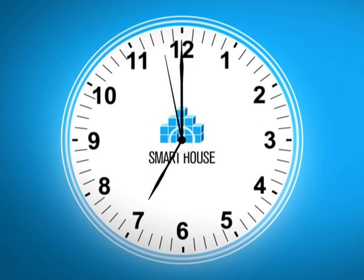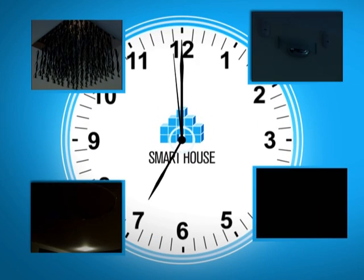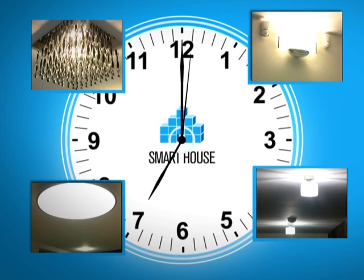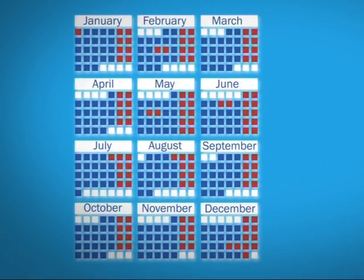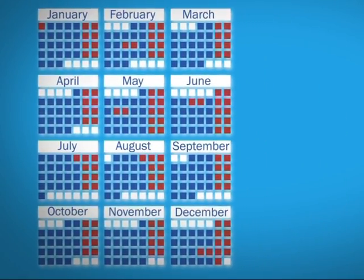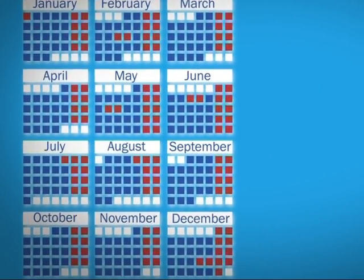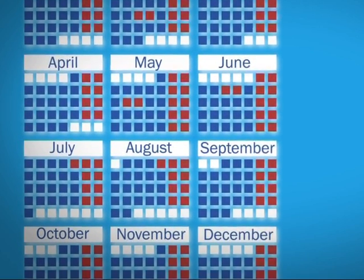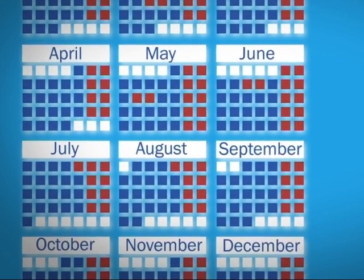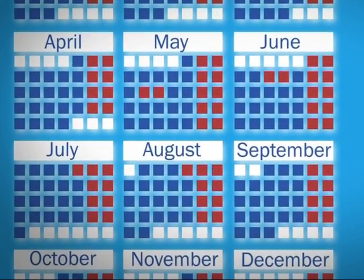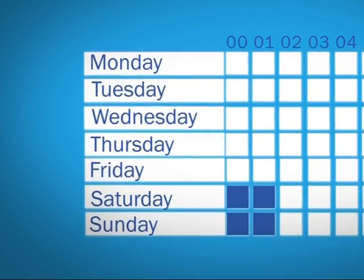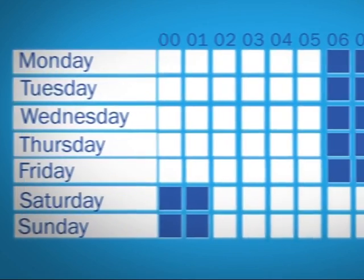In the morning, the lights can light up automatically, exactly at the time when you need to get up. The system can be adjusted to the rhythm of your life and habits. The lighting can be programmed to activate a certain mode at a particular time, such as morning, daytime, or evening.